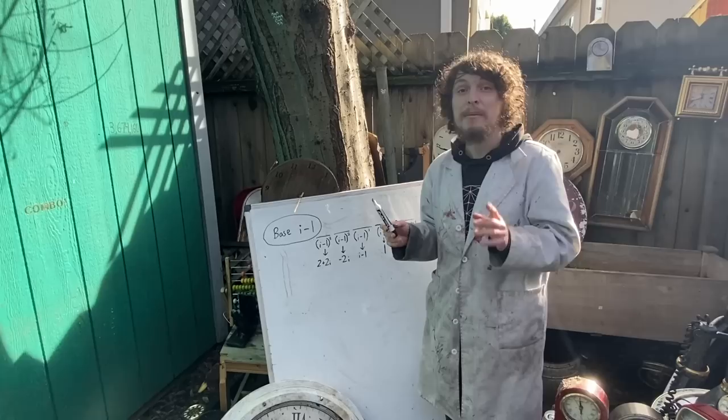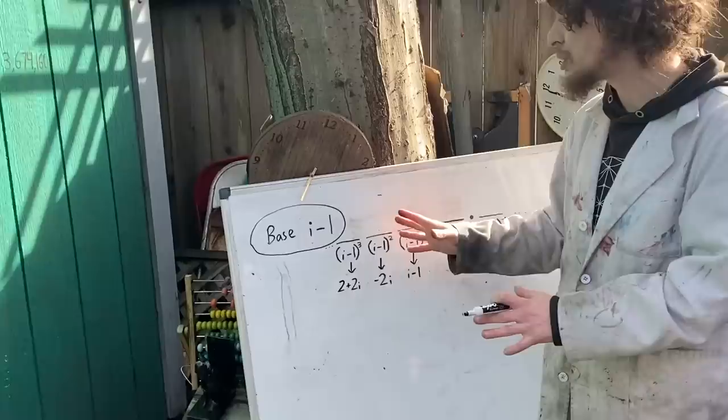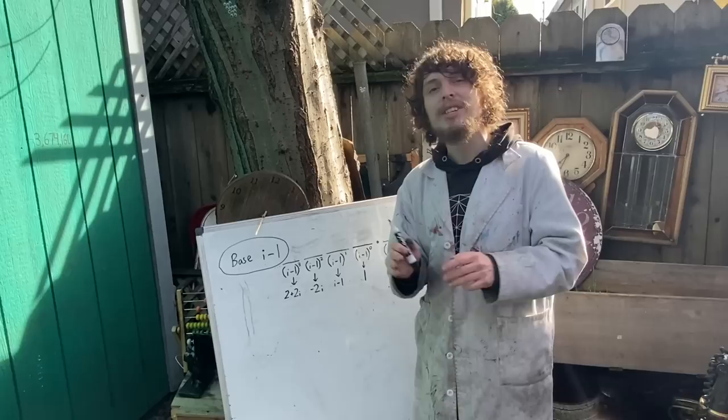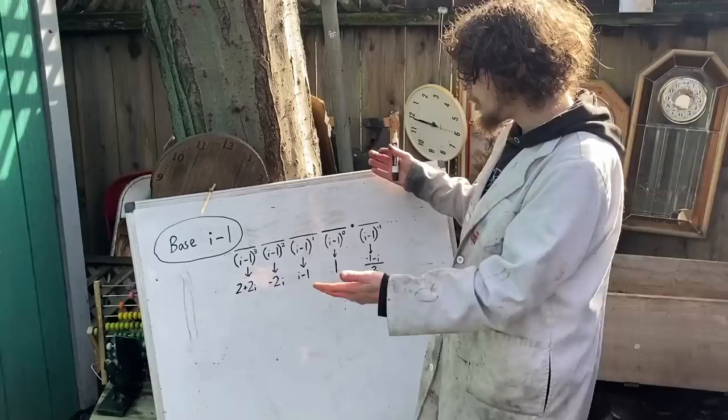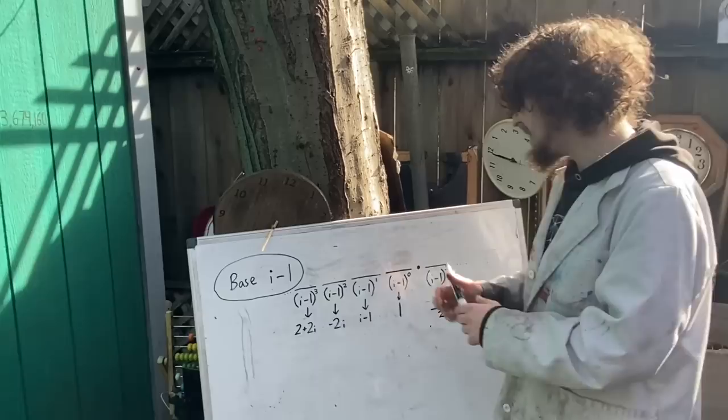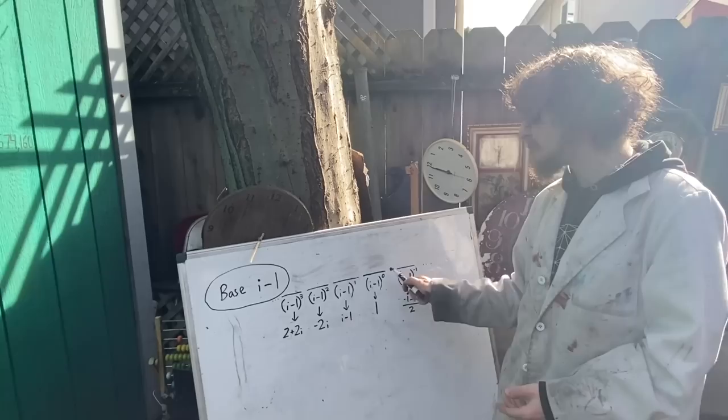Not only is base i minus 1 surprisingly functional at representing complex numbers, but it also has a fractal hidden inside it. To find this fractal shape, let's ask a random sounding question: which numbers have their integer component in a typical base, that's the component to the left of that point, entirely zero, and only contain non-zero digits in their non-integer component, typically digits that are to the right of that point.